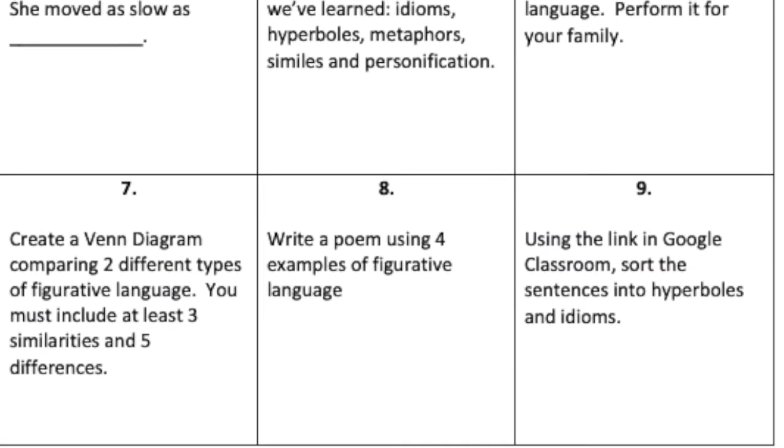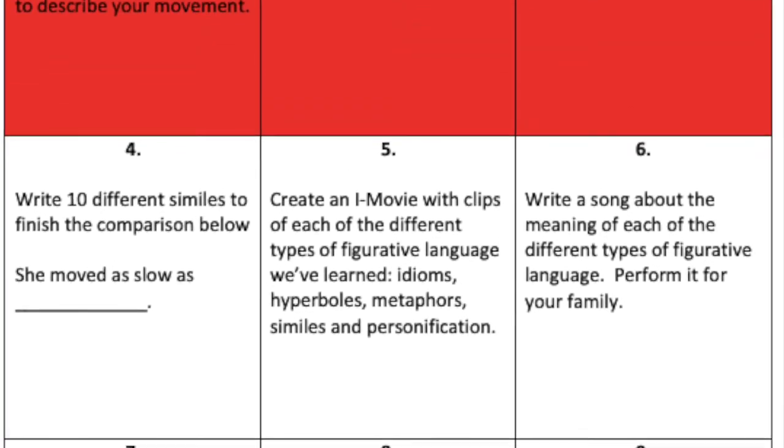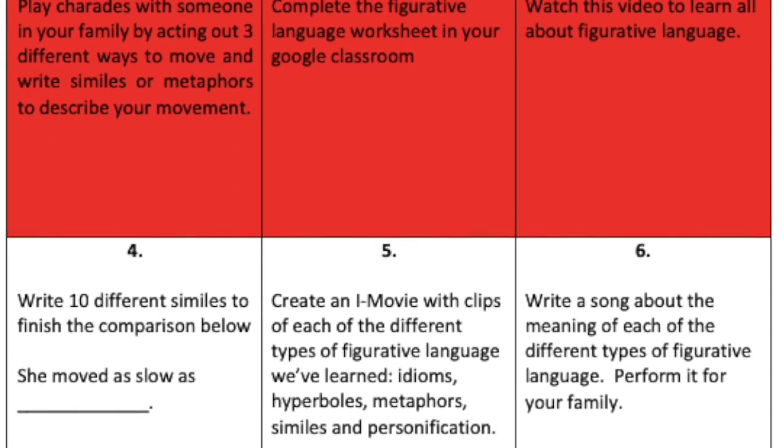As teachers we sometimes have great ideas for tasks, but when we actually think about how long it would take a student to complete them, it takes our design to another level. Our last pitfall is the varying levels of cognitive demand. Sometimes we ask for a very low-level task and sometimes a very high-level task. Writing a poem using four examples of figurative language in number eight is a very different cognitive demand than number two, where students are just completing a worksheet and identifying things. The solution is to label the cognitive demand level for each task on your choice board.